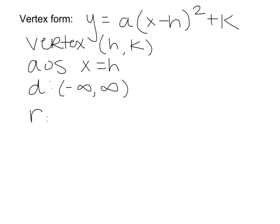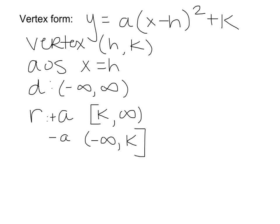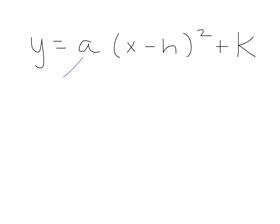For the range: if a is positive, my range is going to be from k with a bracket to infinity. If a is negative, it's going to be negative infinity to k. This should all match the absolute value graph. If a is positive, this makes my parabola have a minimum. If a is negative, it makes my parabola have a maximum.